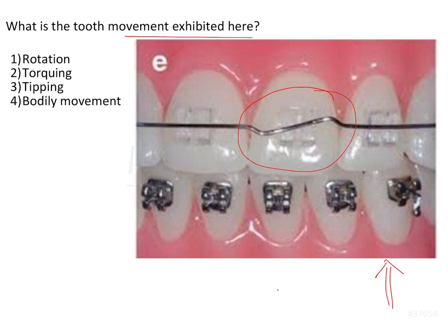These bends are no longer really used because most of the prescription is already in the bracket, which is why we have the straight wire appliance. The modern MBT prescription already has the tip and torque values incorporated into the bracket. However, some minor wire bending is still done to bring about minor tooth position corrections, especially during the finishing stages where you don't want to reposition the brackets. Individual tooth position corrections can still be done by giving bends in the wire.